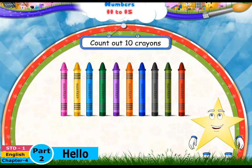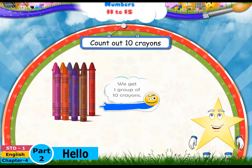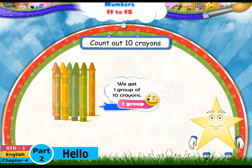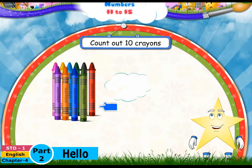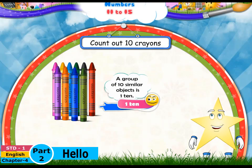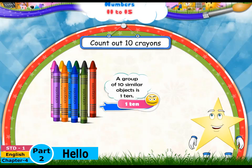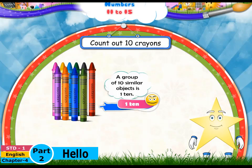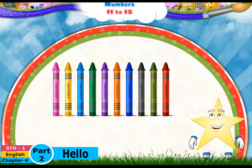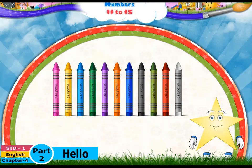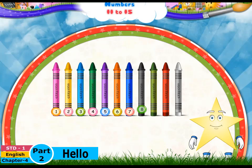Now suppose we put them together — we get one group of ten crayons. Study, a group of ten similar objects is one ten. Let's add one more crayon: we have one, two, three, four, five, six, seven, eight, nine, ten...